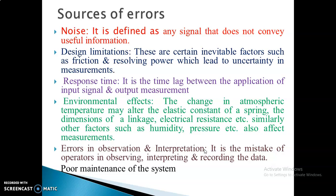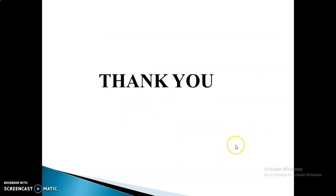The next source is environmental effect, caused by temperature, linkage, electrical resistance, humidity, and pressure. The last source is interpretation, also called observation — errors that occur while interpreting results during recording or reading. All these errors lead to poor maintenance of the system. These are the different sources of errors that can affect a particular instrument measurement. These are all the classifications of errors, how we can overcome them, and what types of errors are caused.